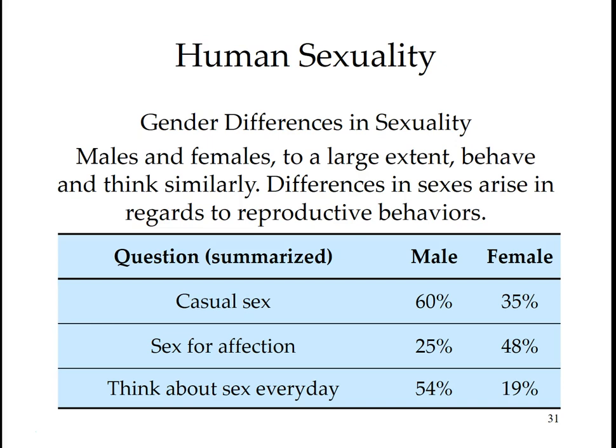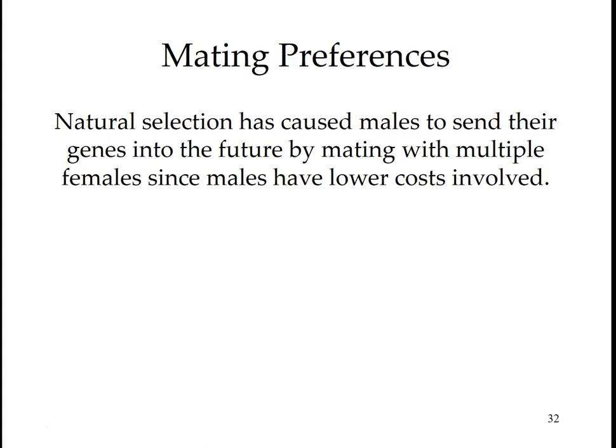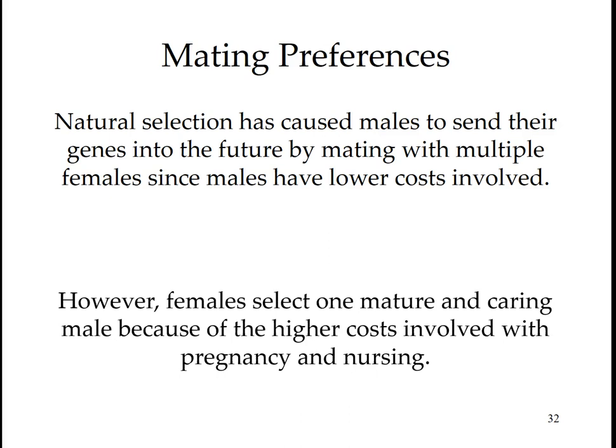Gender refers to biologically and socially influenced characteristics by which people define male and female. One of the largest reported gender differences is women's greater disapproval of and lesser willingness to engage in casual, uncommitted sex. In comparison to women, men think more about sex, masturbate more often, are more likely to initiate sex, and make more sacrifices to gain sex. Men also have a lower threshold for perceiving warm responses as a sexual come-on, and the unfortunate result can range from sexual harassment to date rape. Natural selection has caused males to tend to send their genes into the future by mating with multiple females, since males have lower costs involved.